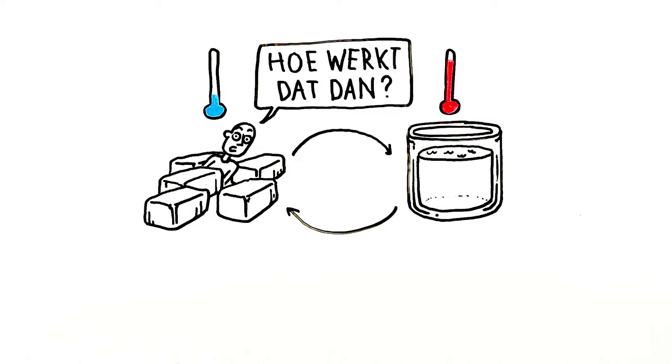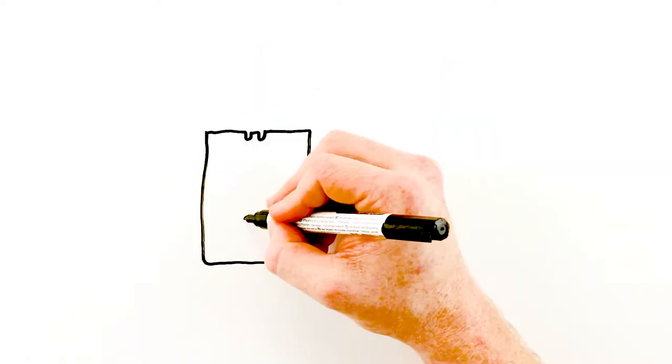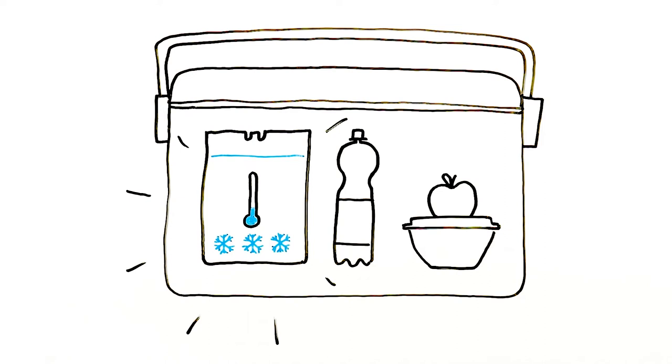So, how do they work? Take a cooling element in a refrigerator. It absorbs the heat in the compartment until both reach the same temperature. Then, it's served its purpose for the time being.